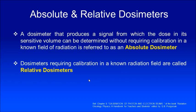What are absolute and relative dosimeters? A dosimeter is said to be an absolute dosimeter if it produces a signal from which the dose in its sensitive volume can be determined without requiring a calibration in a known field of radiation. So an absolute dosimeter should not require a calibration — it should directly give you absorbed dose. Calorimetry, Fricke, and free-air ionization chambers could be referred to as absolute dosimeters.